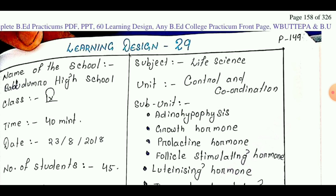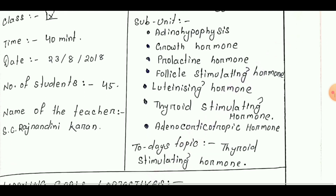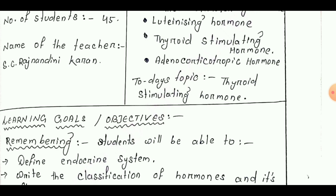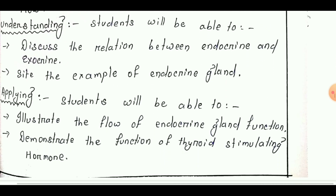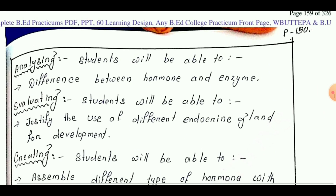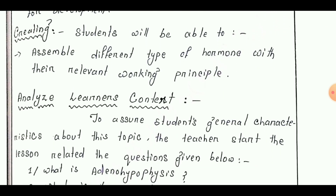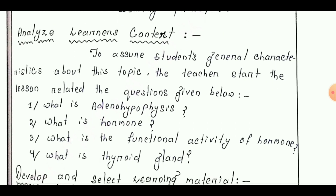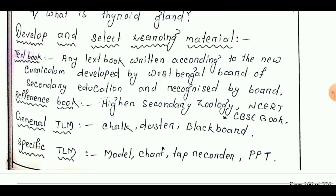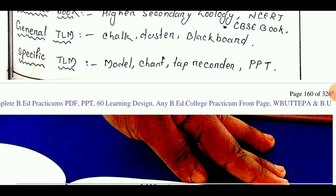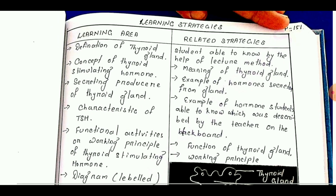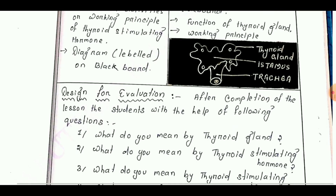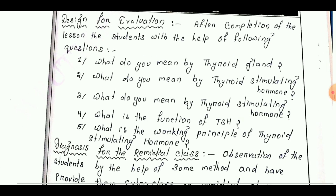Learning design number 29 is taken from Class 9. Today's topic is 'Thyroid Stimulating Hormone.' Learning goals are: remembering, understanding, applying, analyzing, evaluating, and creating. Next point is analyze learner's context, then develop and select learning materials. Next is learning strategy, design for evaluation, and diagnosing the weakness for remedial class.